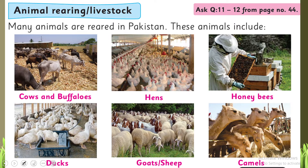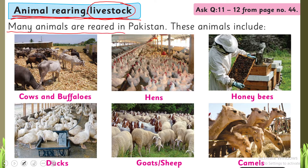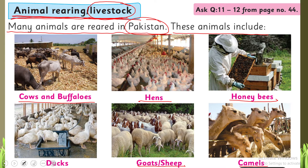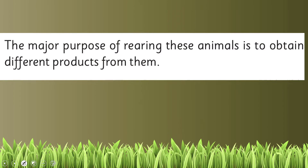Let's quickly start the reading. Put your fingers where I will read. Animal rearing or livestock — both have almost the same meaning. Many animals are reared in Pakistan. These animals include cows and buffaloes, hens, honeybees, ducks, goats and sheep, and camels.